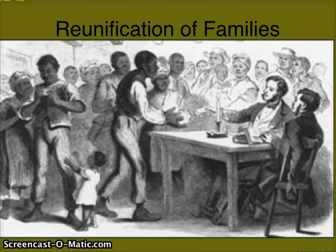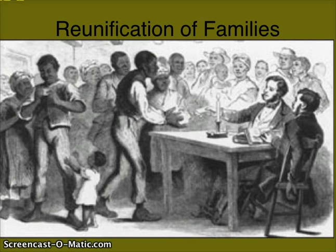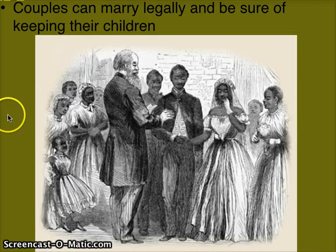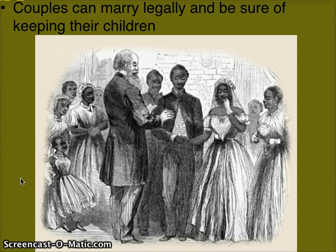We also see the reunification of families. During slavery, many families were broken apart — husbands and wives sold to different plantations, children sold off separately. Now many African-Americans travel to be reunited with their families. Couples can actually marry and know they will keep their children. Up until this point, slave masters would sell off slaves' children to different plantations to make money — that, of course, is no longer going to happen.